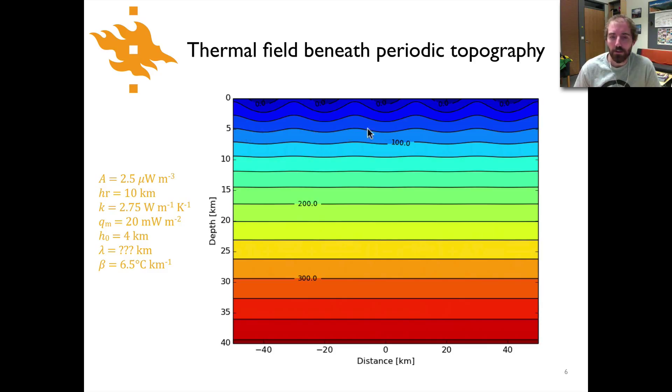So their amplitude gets smaller and smaller as you go to greater depth. Each one of these lines in case it's not totally clear at this point are lines of constant temperature and it's about a 25 degree contour interval so each one of these lines would be 25 degrees higher temperature. And so you can see here that by the time you get to 15 kilometers depth the lines are basically horizontal. So that effect of the topography only applies in the upper part of the crust in this case.